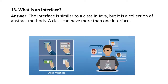Next question: what is an interface? The interface is similar to a class in Java, but it is a collection of abstract methods. A class can have more than one interface. For example, whenever you visit an ATM machine, you interact with that machine for withdrawal of money — you have one screen with a few options, and that screen is nothing but the interface.